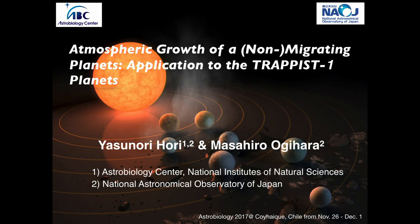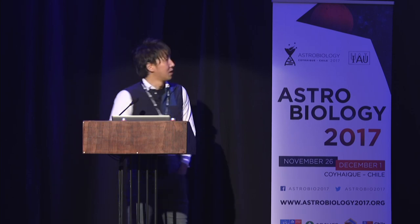I'm Yasuno Ihori from the Astral Biology Center and the National Astronomical Observatory of Japan. I appreciate this great opportunity to come to a nice place and give a talk here. Today I will talk about the TRAPPIST-1 system, collaborated on this work with Masahiro Ogihara. First, let's see what the TRAPPIST-1 system is like.